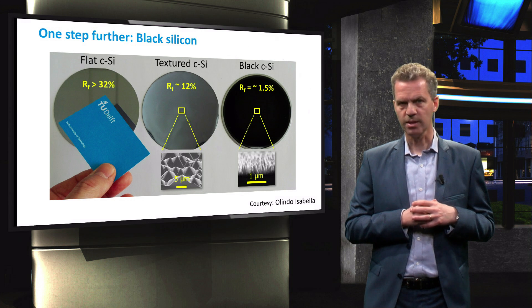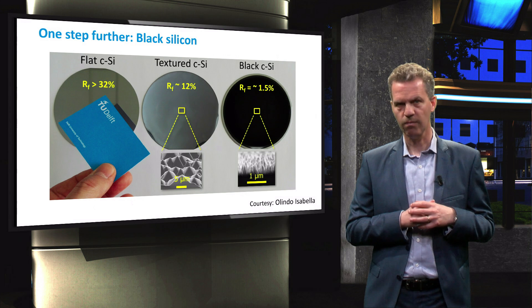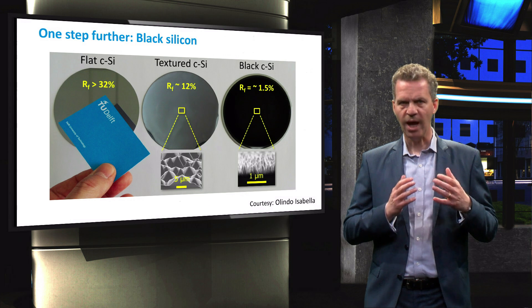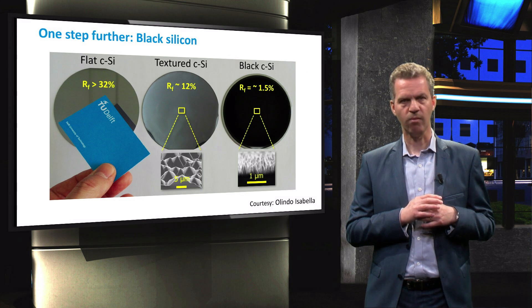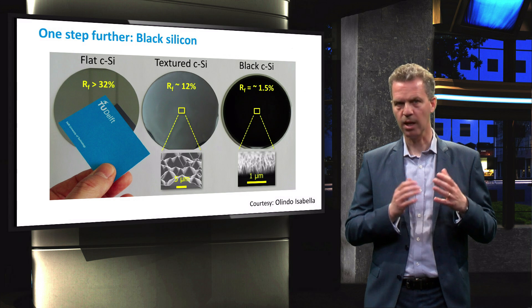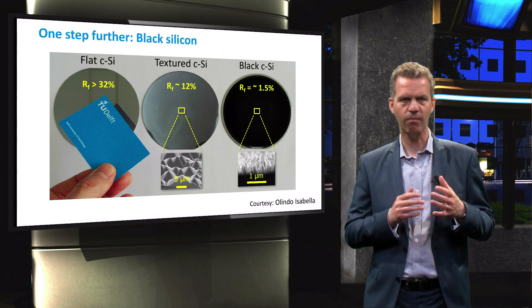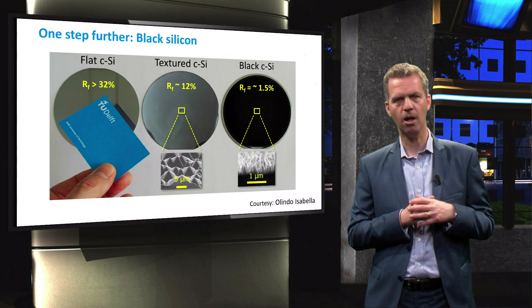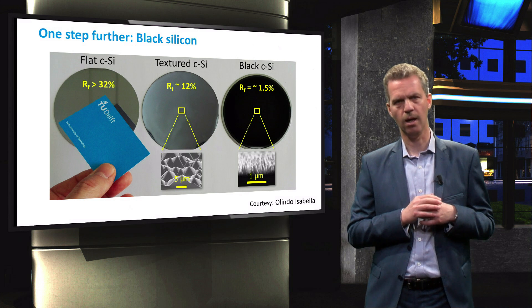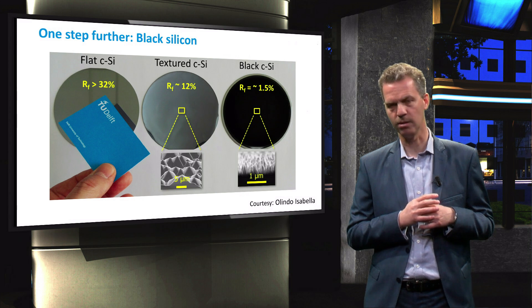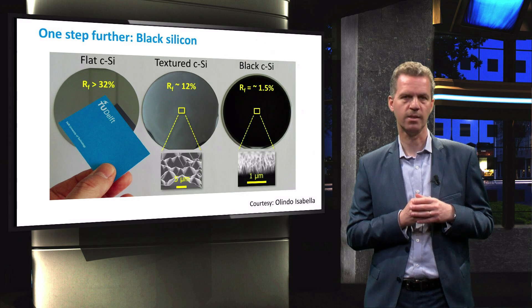Recently, more advanced texturing has been obtained by means of dry etching. In that case, the texture does not have a pyramidal shape, but needle-like pillars are obtained with high aspect ratio and the wafer will appear black for the human eye as none of the incident light will be reflected. This is shown on the right-hand side.